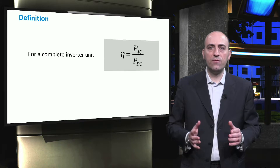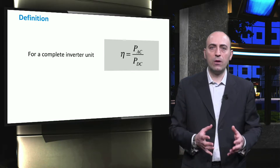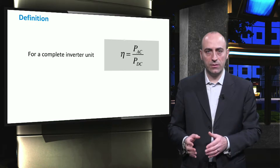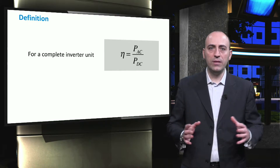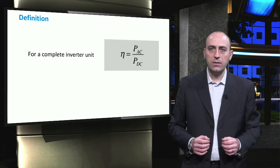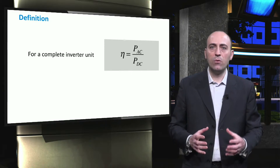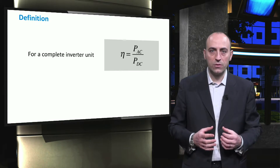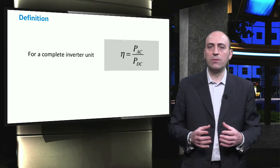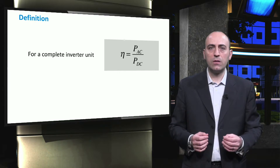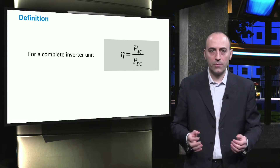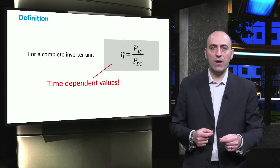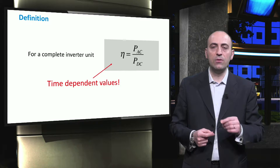The efficiency of the inverter is defined as the ratio between the power output at the AC side and the power input at the DC side. This definition comprises the complete inverter unit. Since the real inverter has many components and due to the lack of detailed data from inverter manufacturers, some models have been developed to describe the efficiency. These models are based on empirical formulas. It is important to note that the efficiency reported is an instantaneous value, which means that it is time dependent.